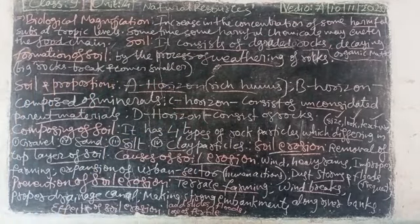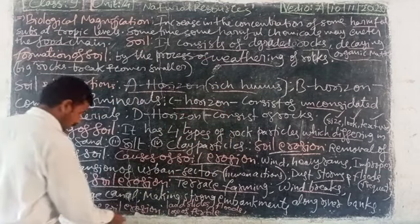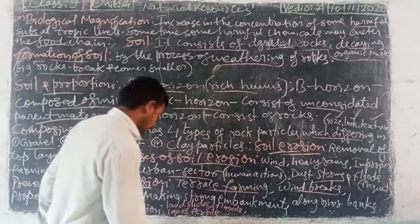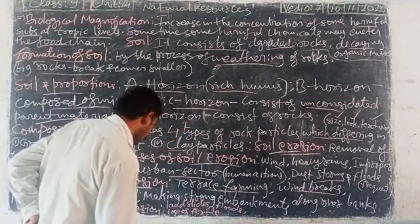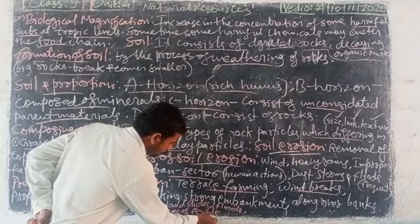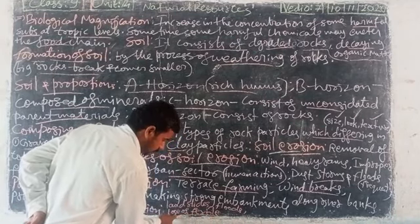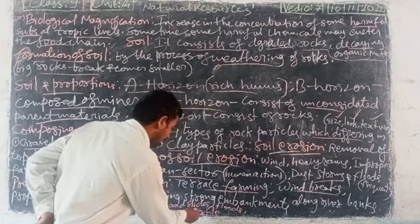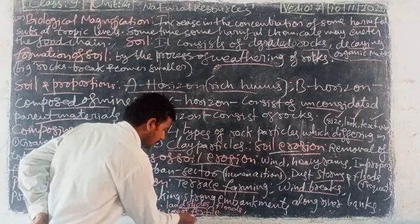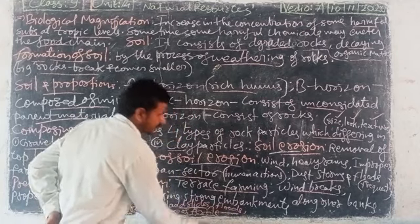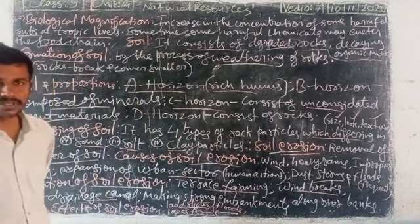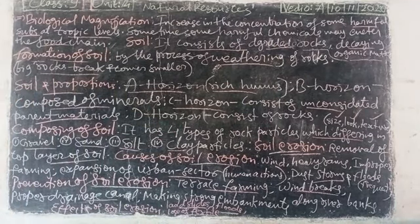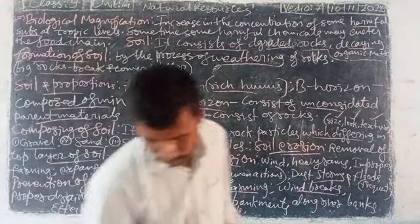Next are the effects of soil erosion. The effects include loss of water, land slides, and flux. So loss of water, landslides, and flux are the main effects of soil erosion.